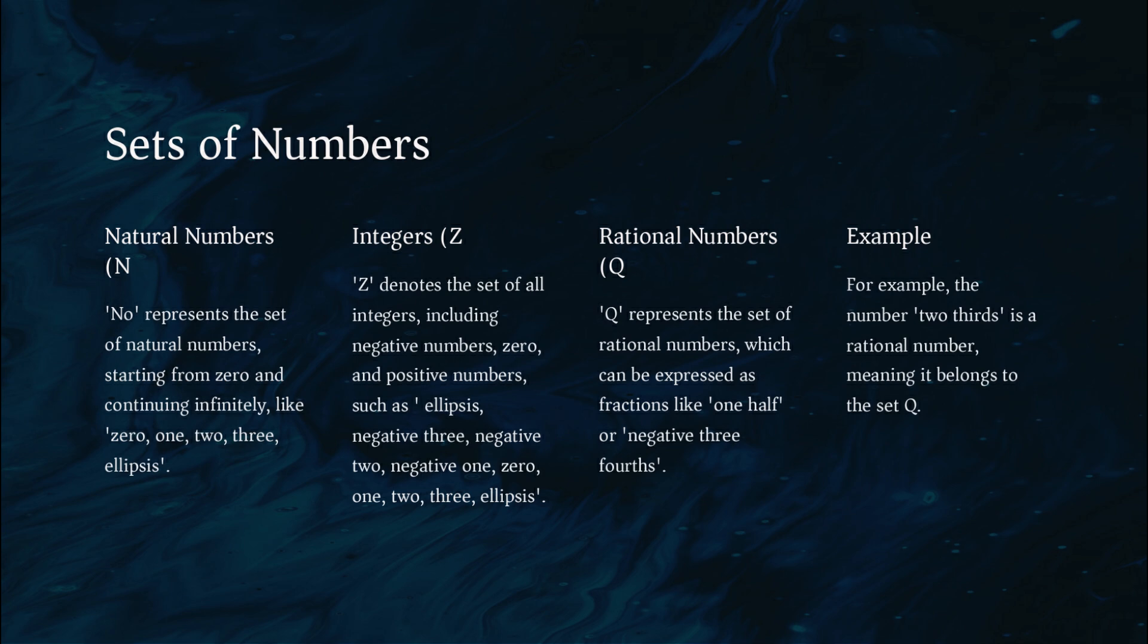For example, the number 2 thirds is a rational number, meaning it belongs to the set Q.